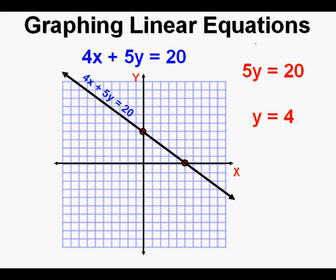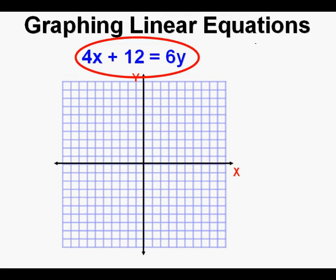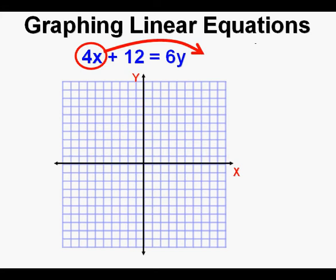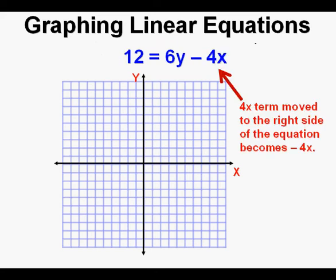Let's look at this other equation: 4x plus 12 equals 6y. This equation is not in standard form or slope-intercept form, so we need to get it to standard form with a number on one side and variables on the other. The easiest way is to move the x-term, which is 4x, to the other side of the equation, where it changes signs to become minus 4x.